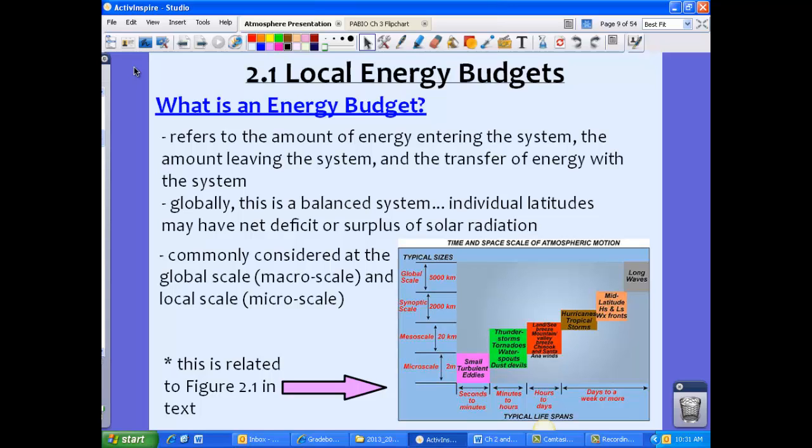This picture is actually related to a picture in your textbook, Figure 2.1. And this is commonly considered at a global scale. So when we're talking about atmosphere, atmospheric motion, we're talking about things either at a macro level, like global scale, or we're talking about them at a micro level, meaning local scale. So depending upon the type of weather or climate or whatever phenomena we're talking about, it might be more on a micro scale or a macro scale, or something called a meso scale, which is sort of in the middle of the two. So this figure is related to Figure 2.1 in your textbook. They're slightly different, but they're similar.